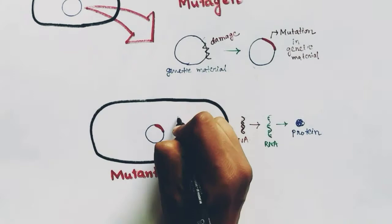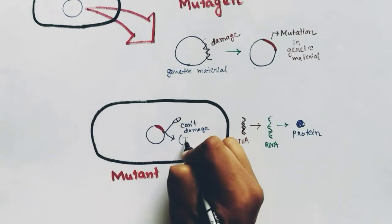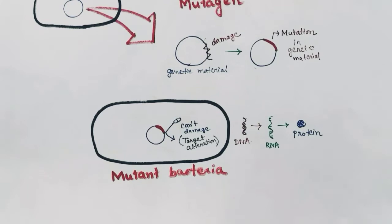Now, if we apply the same antibiotic to kill the mutant bacteria, it will not be able to do that. Because the target where the antibiotic broke the genetic material has been altered. One particular antibiotic or chemical compound is designed to break a particular bond.